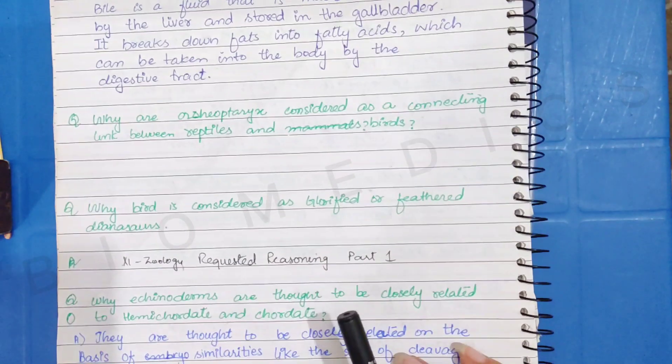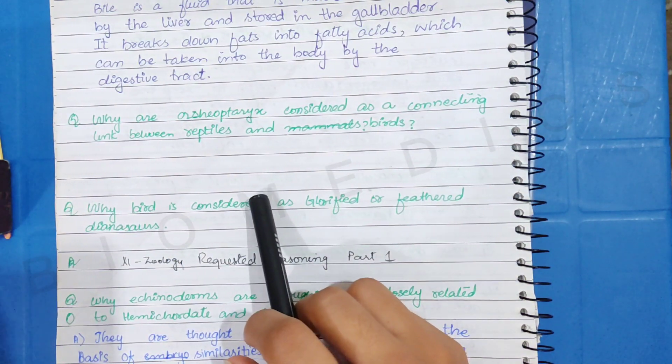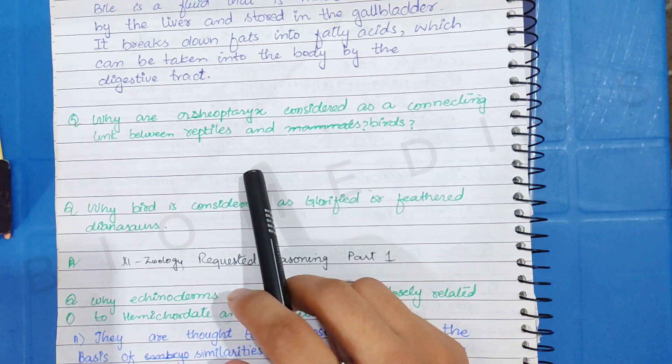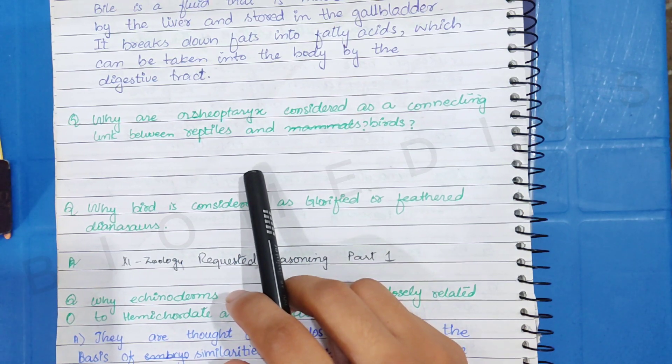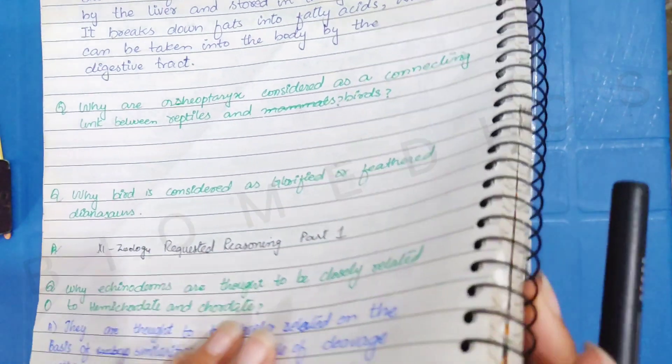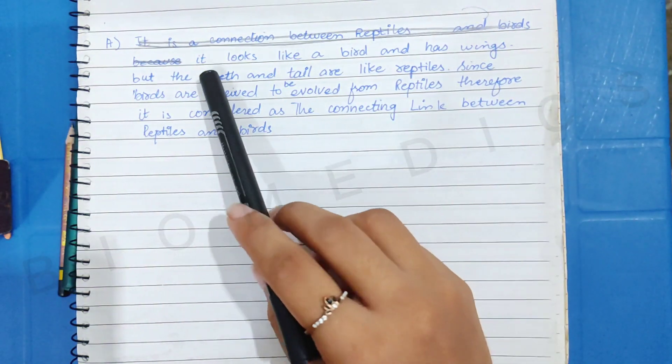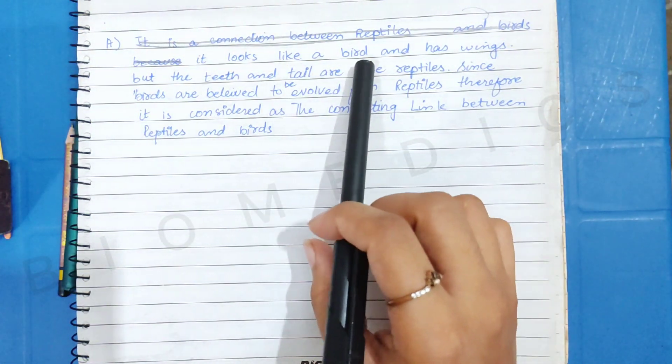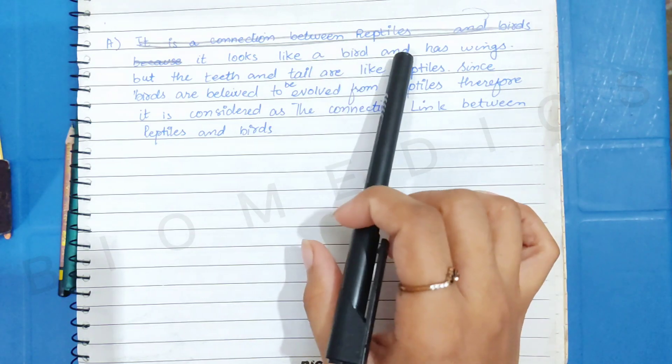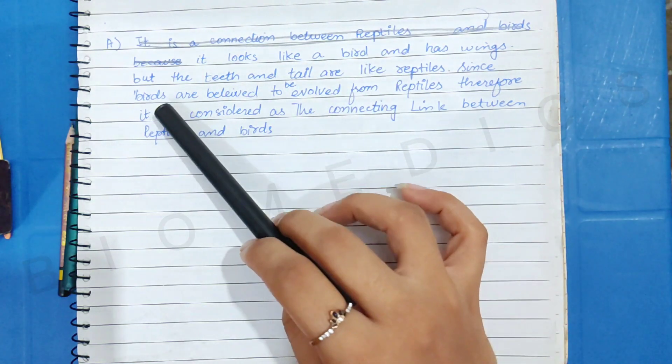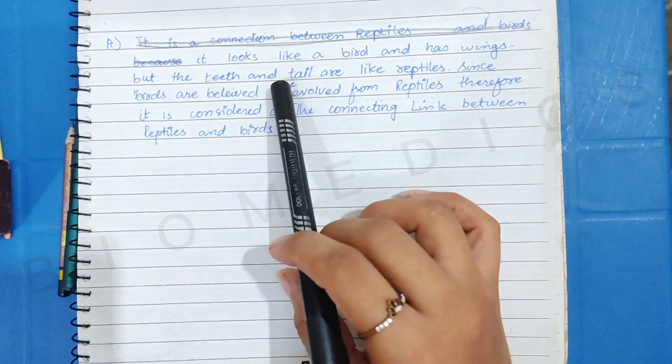Second question is, why are you considering Archeopteryx as a connecting link between reptiles and mammals? It means that it has a connection that I have to explain to you. Archeopteryx is like a bird. The wings are also like a bird, so these are the characters of bird.